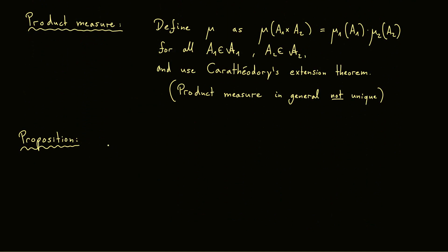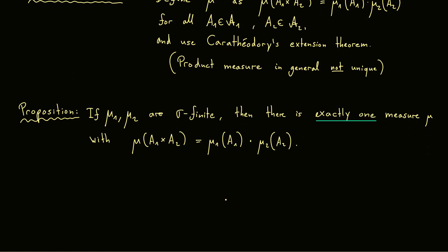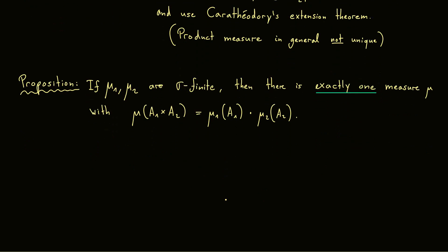Indeed what is helpful is the case when the two measures are sigma-finite. And please recall in the case of the normal Lebesgue measure on Rn we know that this one is sigma-finite. And now in this case we find exactly one measure with the wanted property. But of course it's much more interesting to know what the measure does on subsets that are not rectangular.